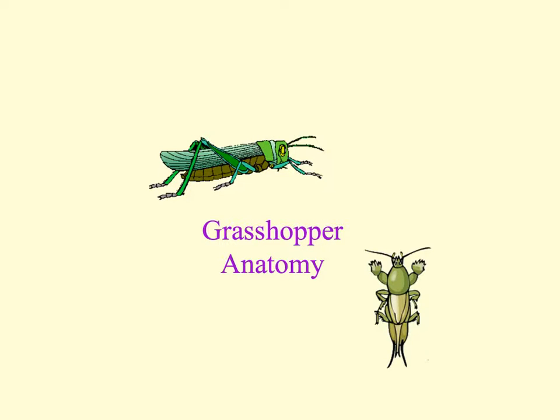In this video, we will be reviewing the anatomy of the grasshopper. The grasshopper is in the phylum Arthropoda. The arthropods are the largest of all the known animal phylums — three-quarters of all known animal species are arthropods.